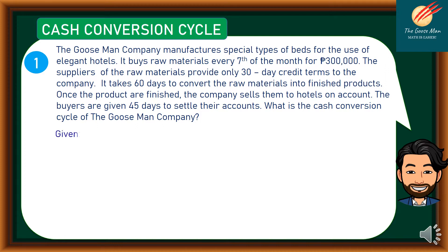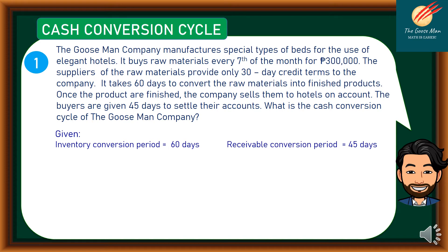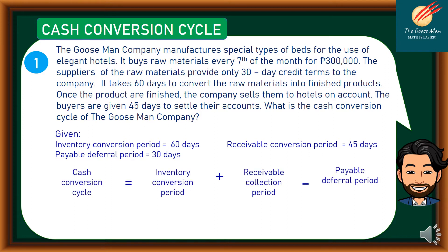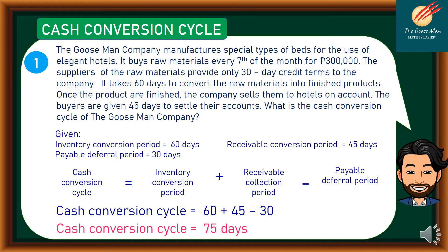Let's identify the given. Inventory conversion period equals 60 days, receivable conversion period equals 45 days, while the payable deferral period equals 30 days. Applying our formula: cash conversion cycle equals inventory conversion period plus receivable collection period minus payable deferral period. So we have 60 plus 45 minus 30. Therefore, the cash conversion cycle is equal to 75 days.